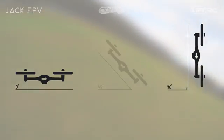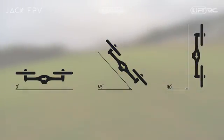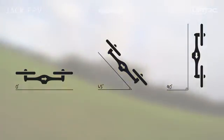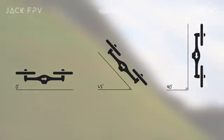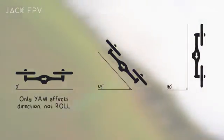In the middle of all of this is a 45-degree pitch. At zero-degree pitch, your quad won't change direction if you apply roll input — it will only change direction if you apply yaw. At 90-degree pitch, your quad will only change direction if you apply roll input; if you apply yaw, your quad won't change any direction. So we can come to the conclusion that at a 45-degree pitch, your roll and yaw inputs will theoretically be the same.